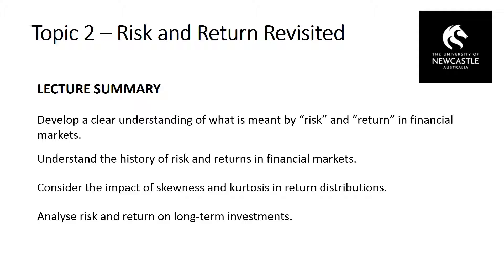Moving from a one-period to a multi-period model has an interesting effect on risk and return. Over multiple periods, for an asset that generates a positive expected return — such as equities compared to a risk-free rate — the risk of equities underperforming the risk-free rate is quite high in a one-period model due to large variance of returns. However, as we repeat the experiment over many periods, over a long time horizon the risk of equities underperforming the risk-free rate becomes significantly lower. Therefore, in long-term investments, risk and return is actually different to our one-period world.